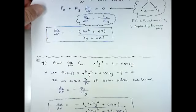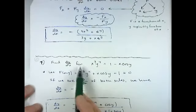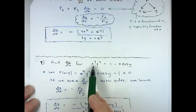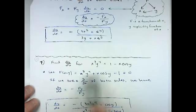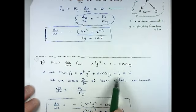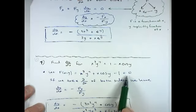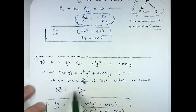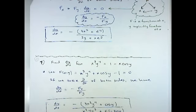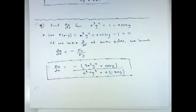Let's try this. Here's another equation: x³y⁴ = 1 − x·cos(y). Move everybody over to one side and set it equal to zero, then use the formula dy/dx = −F_x / F_y. Go ahead and pause the video. You should get that answer.